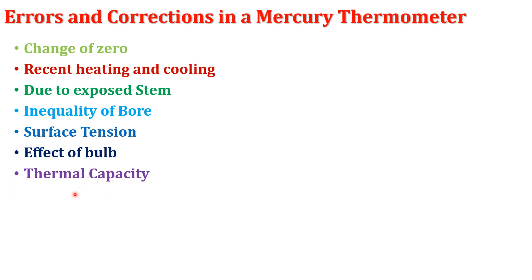The last error is thermal capacity. If the thermal capacity of the bulb is large, part of the heat is used in heating the glass bulb, so the thermometer reading will always show a lower value. To correct this error, a small bulb with lower thermal capacity should be used to get accurate readings. These are the different errors in the mercury thermometer and how we correct them.